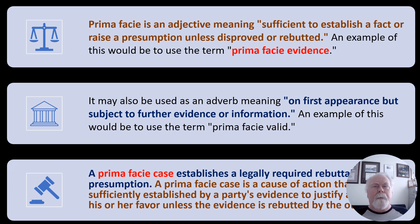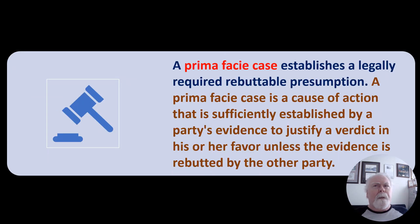The most important way we use it is: a prima facie case establishes the legally required rebuttable presumptions needed to get a conviction. A prima facie case is actually a strong case — it means admissible evidence exists sufficient to establish the elements of the crime or civil wrong at issue. It is the cause of action sufficiently established by the party's evidence to justify a verdict in their favor, unless rebutted by the other party.